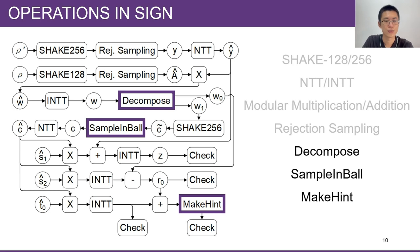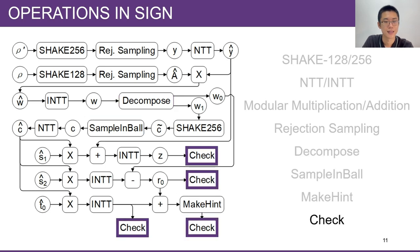The Decompose breaks up numbers into high-order and low-order bits. SampleInBall generates a polynomial with only tau non-zero coefficients whose values are 1 or minus 1. This algorithm is an inside-out version of the Fisher-Yates shuffle. MakeHint is a technique used in DILITHIUM to reduce the size of a public key. Several different security conditions are checked at the end of the loop.